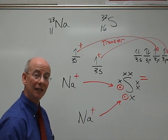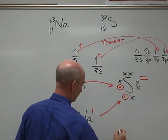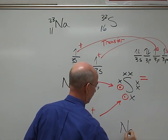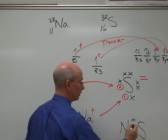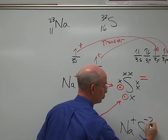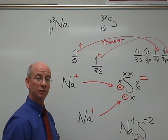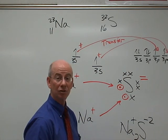You can see this is slightly different. This time when we write the formula, notice we have Na, which is plus 1. Sulfur is minus 2. And we needed 2 sodiums. That's our formula.